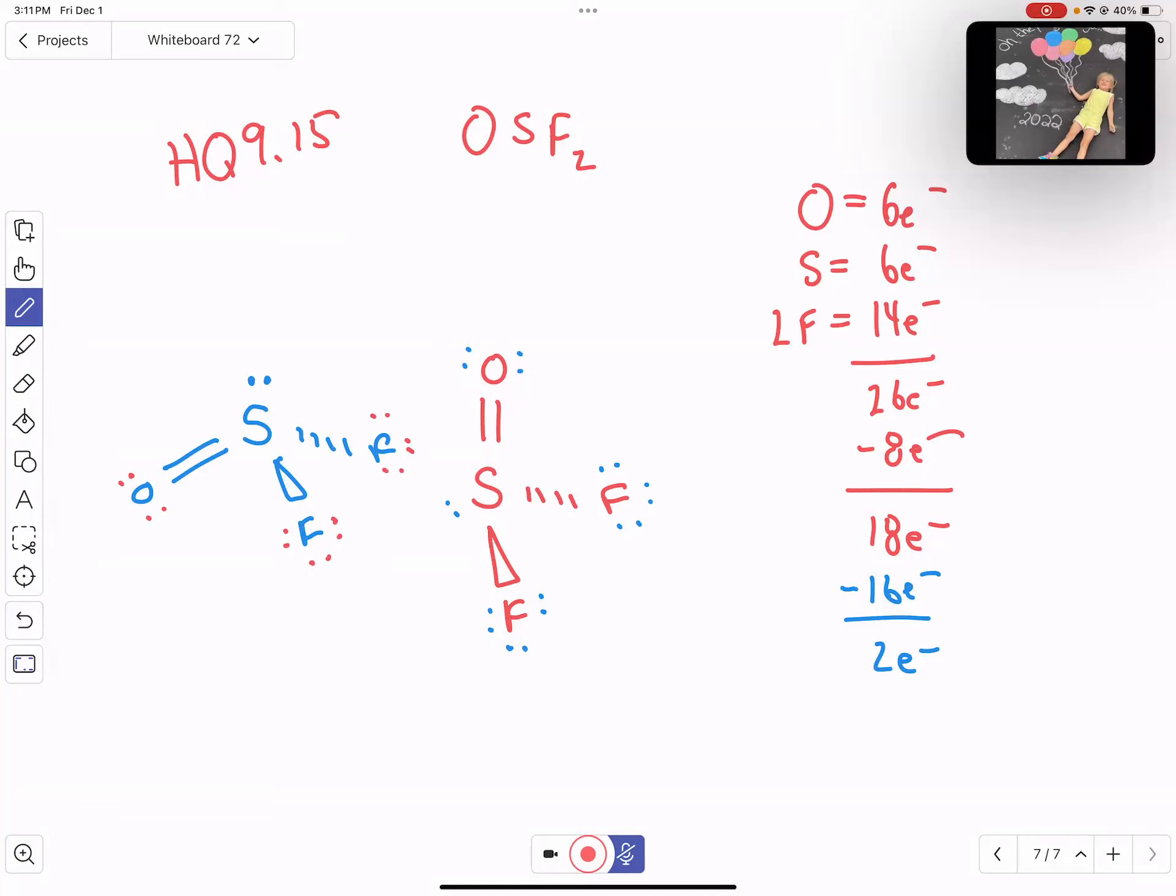And so the key, right? We've got how many domains total? Yeah, I've got four domains. Four domains means the electron domain geometry is tetrahedral.